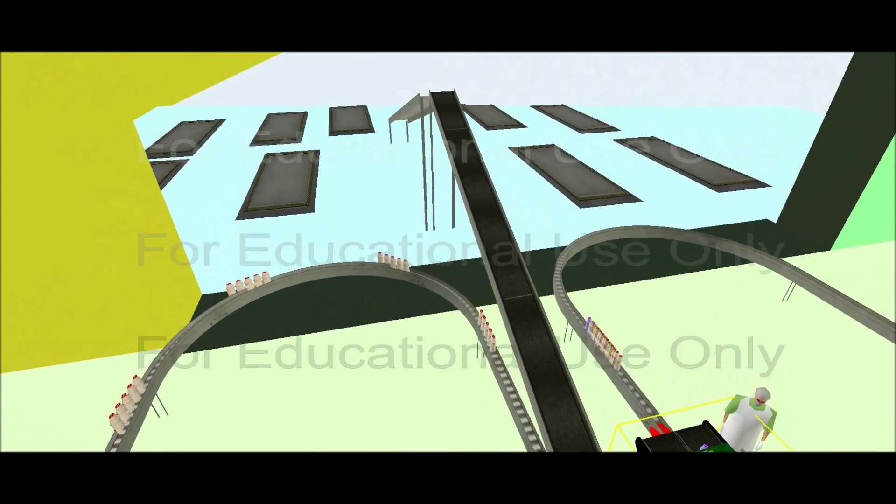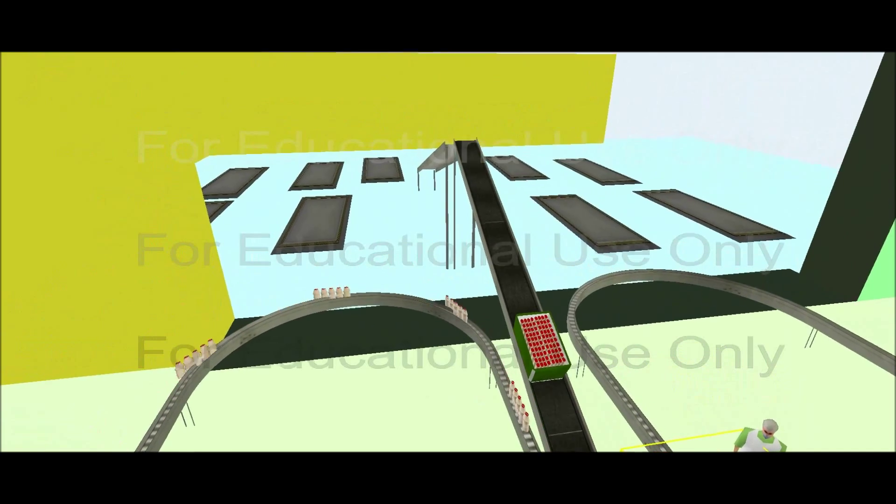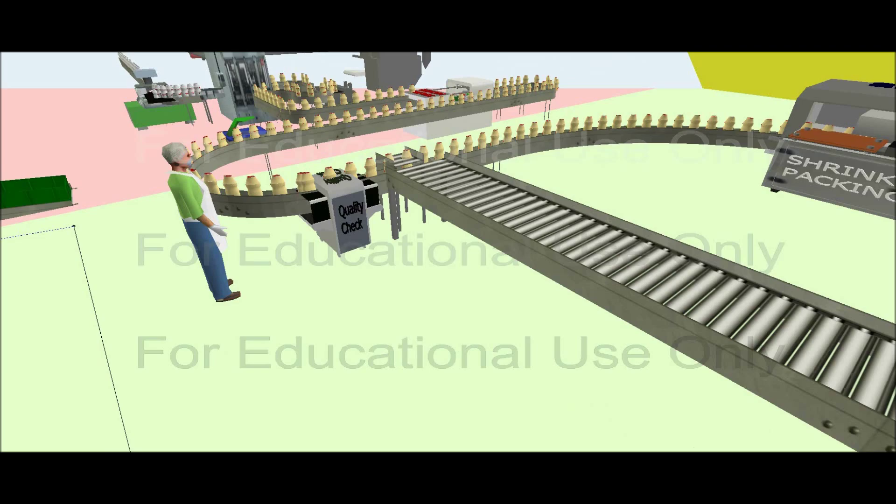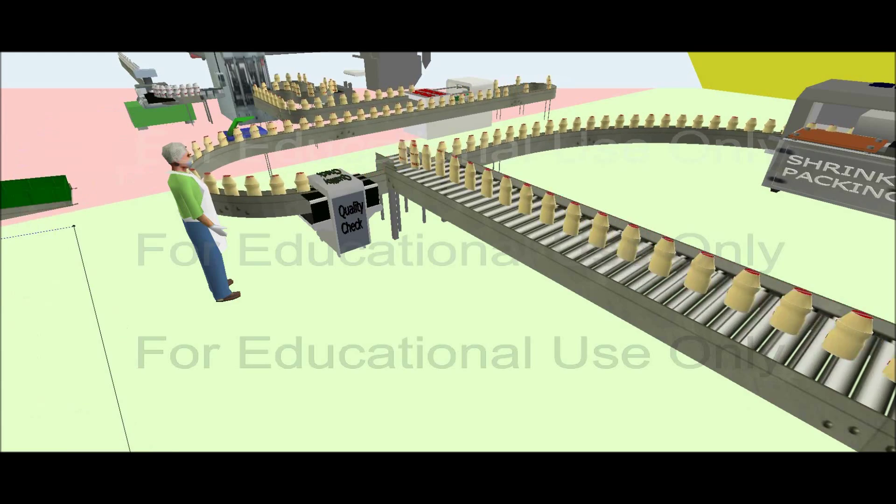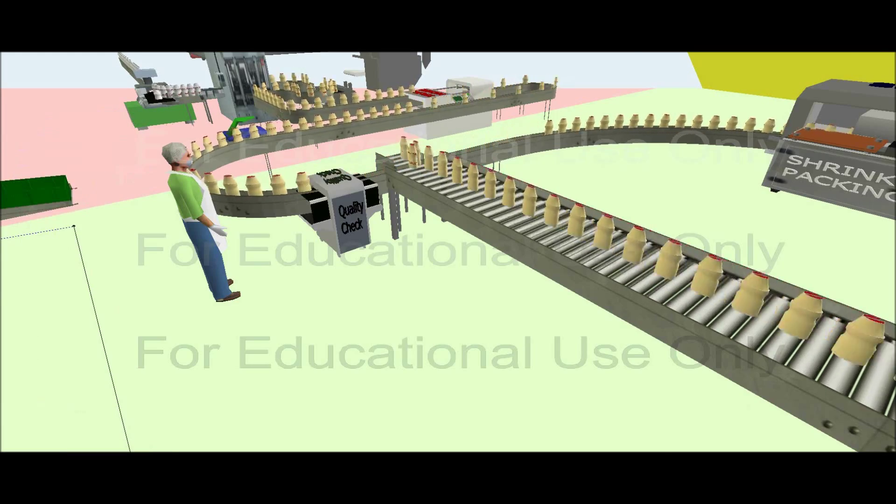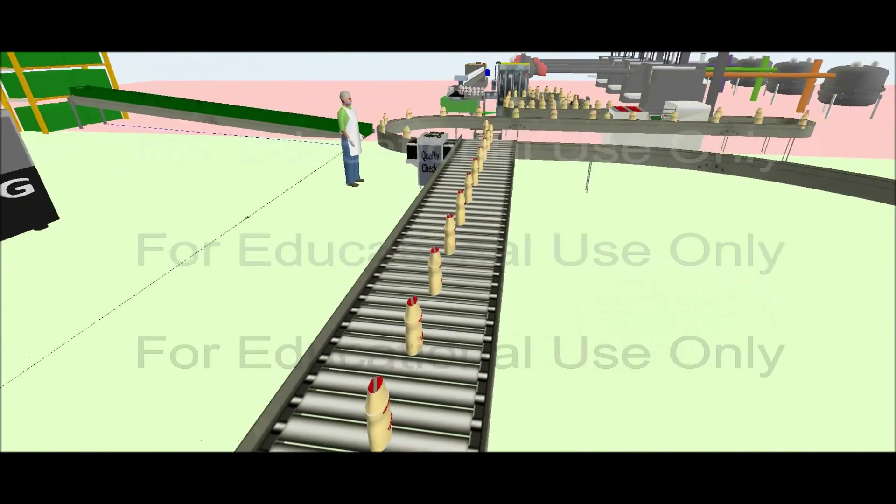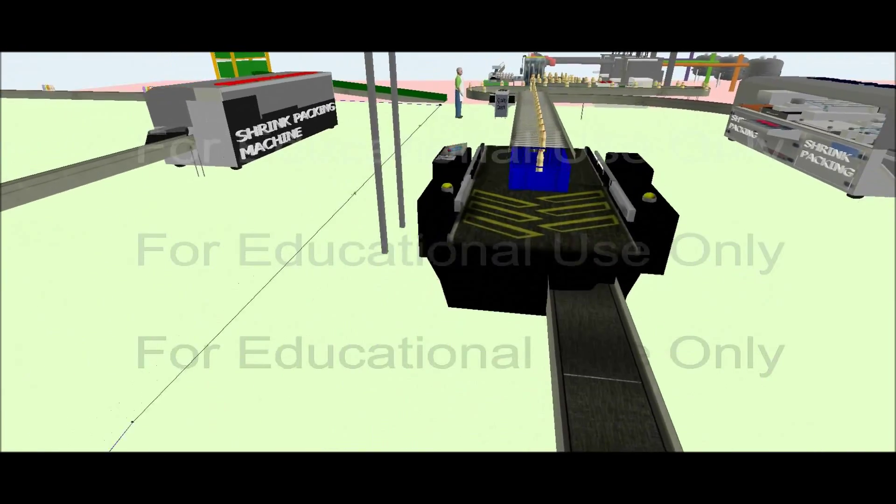Each tray is sent up a conveyor belt for storage into the cold room. After sufficient shrink packs are produced, production shifts to packing individual bottles. Individual bottles are packed into trays of 100 Youcold bottles by a machine.